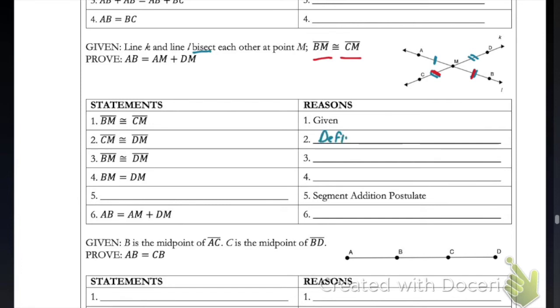If we look at line two, it says that CM is congruent to DM. We just talked about how that is going to be the definition of a bisector. Remember, bisecting is a cut in two, so that's just going to be the definition there.